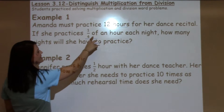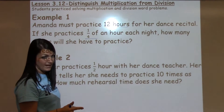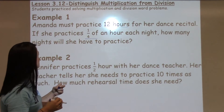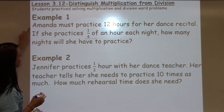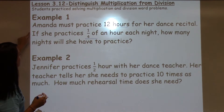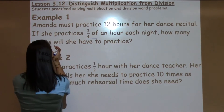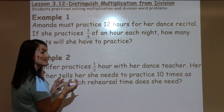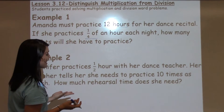Now, students are going to see the word 'of' and automatically think they must multiply those numbers. But if we really think about the situation, this is actually a division problem. If Amanda must practice 12 hours for her dance recital, and she only practices a little bit each night, to find the number of nights she has, she has to divide.